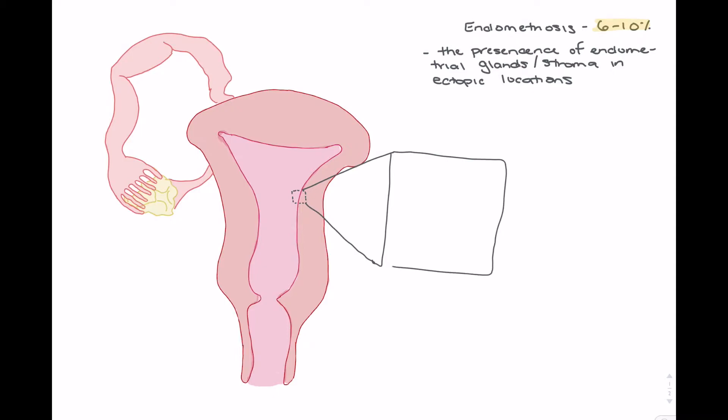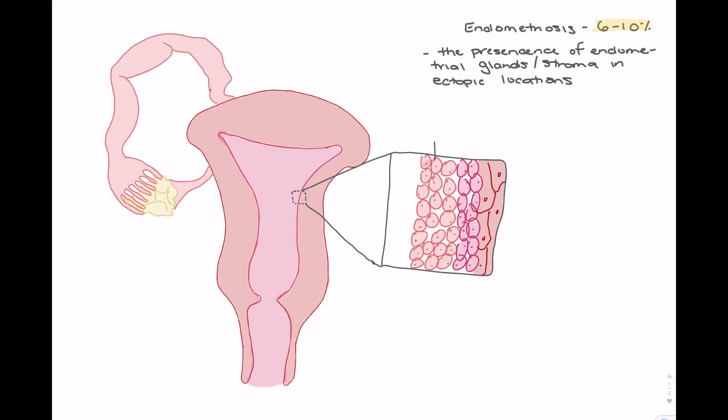When we look at our endometrium, we know that we have a few layers. The innermost layer is the stratum functionalis. This is the layer that's going to slough off during menstruation. The innermost layer is our stratum basalis, the basement layer of the endometrium that stays consistent during menstruation. When we're talking about endometriosis, we're primarily talking about stratum functionalis cells found outside of the typical endometrium.